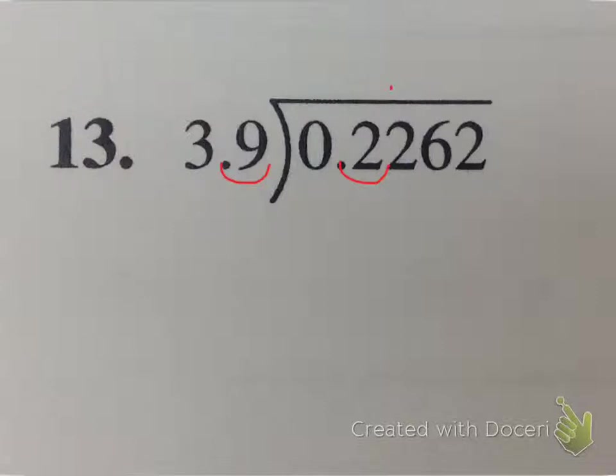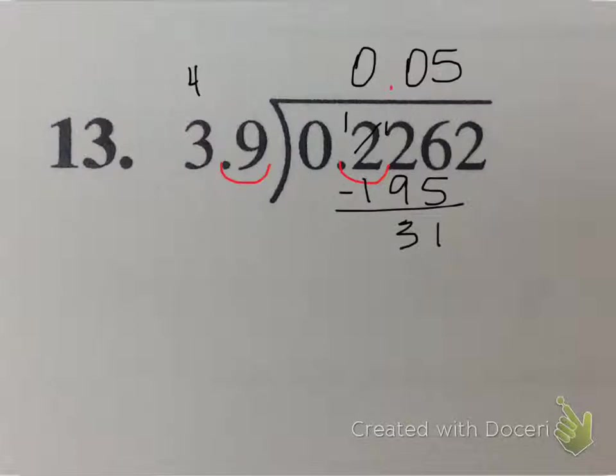So 39 goes into 0, 0 times, 39 goes into 2, 0 times, 39 goes into 22, 0 times, 39 goes into 226. Well if I round the 39 to let's say 40, and I round the 226 to 228, and I know that sounds strange, but the 39 is a 4 and 228, I know 28 is divisible by 4. How many times does 4 go into 23? We might say 5 or 6. Let's try 5, 5 times 9 is 45, and if this doesn't work I can always go back and change it. 5 times 3 is 15 plus 4, so that's going to give me 31. Okay, so that worked.